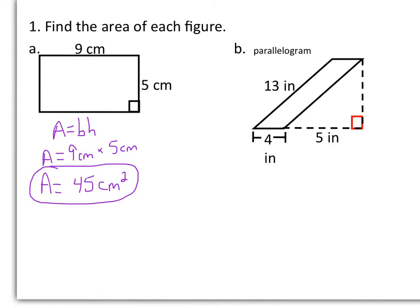In letter B, we're looking for the area of the parallelogram. We have our bases marked 13 and 4, and the perpendicular segment, or altitude, is drawn. However, we do not know the height of the parallelogram. Looking at the right triangle, our hypotenuse is 13 inches. Remember, opposite sides are congruent in a parallelogram, and we need to find the height first — I'll call it x. If we know two of our three sides in a right triangle, we can use the Pythagorean theorem to find the third.